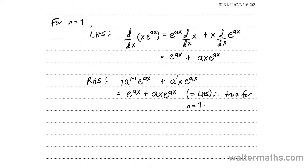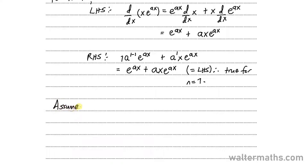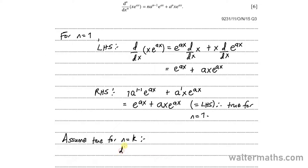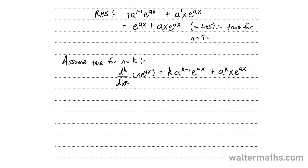Let's go on to making the assumption. Assume true for n is equal to k, where k is some positive integer. In place of n, we are substituting k. So we'll have d to the k by dx to the k of x of e to the ax is equal to k of a to the power of k minus 1 of e to the ax, plus a to the power of k of x of e to the power of ax. That's the assumption.